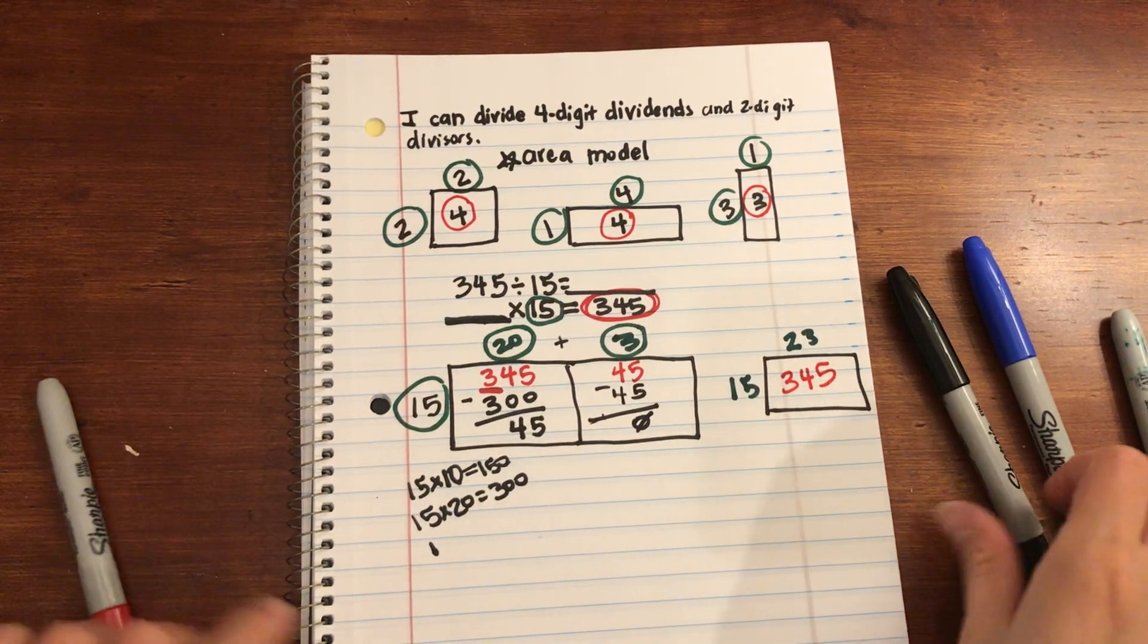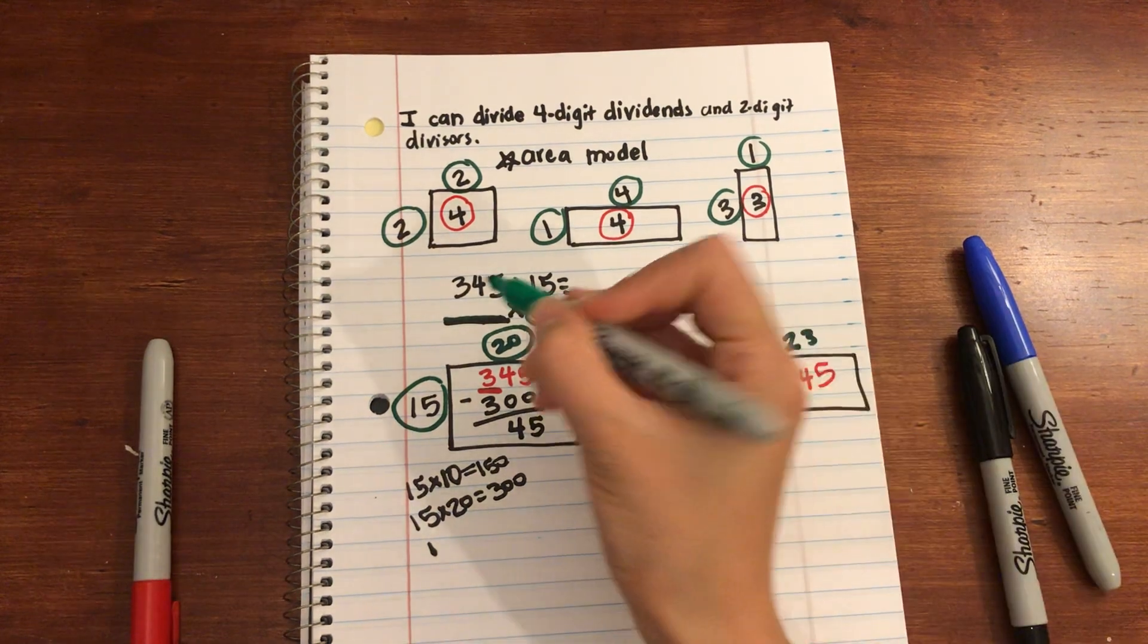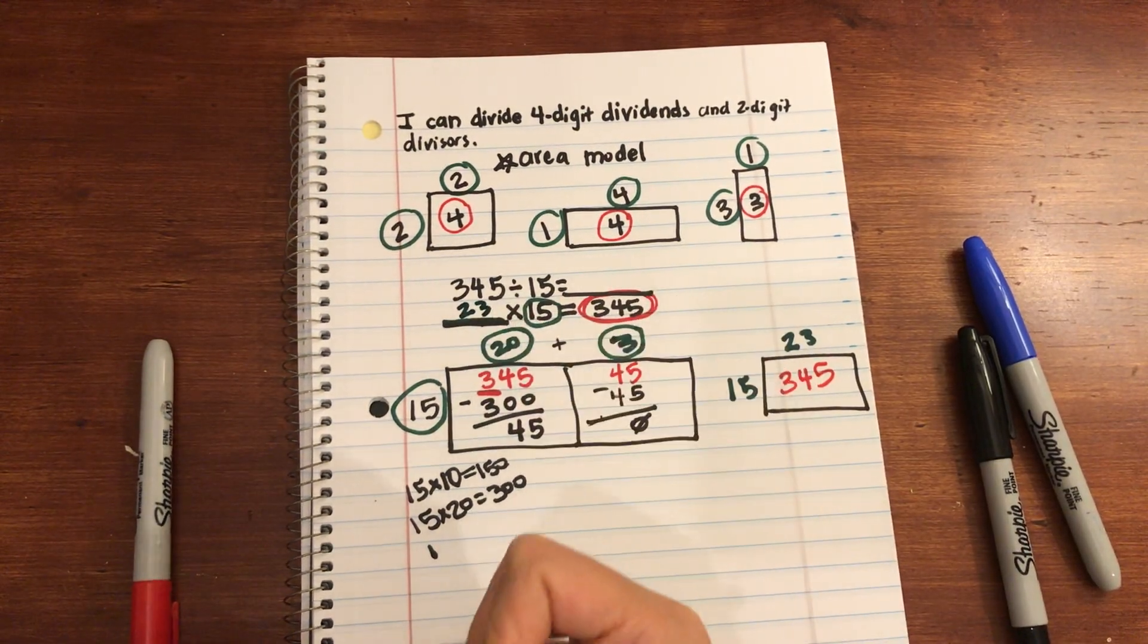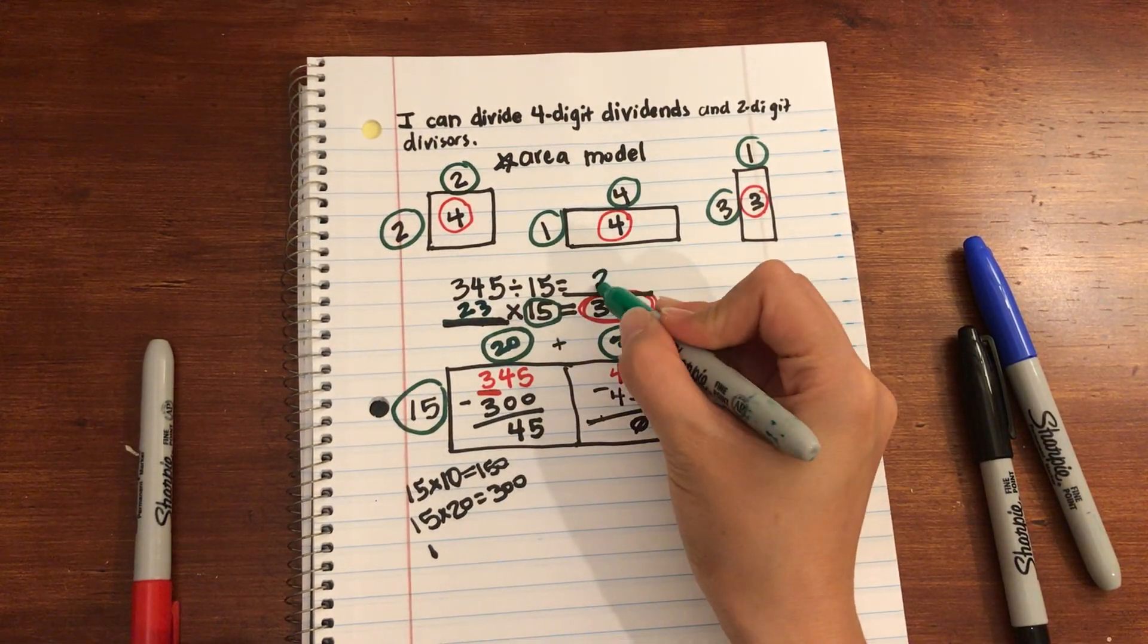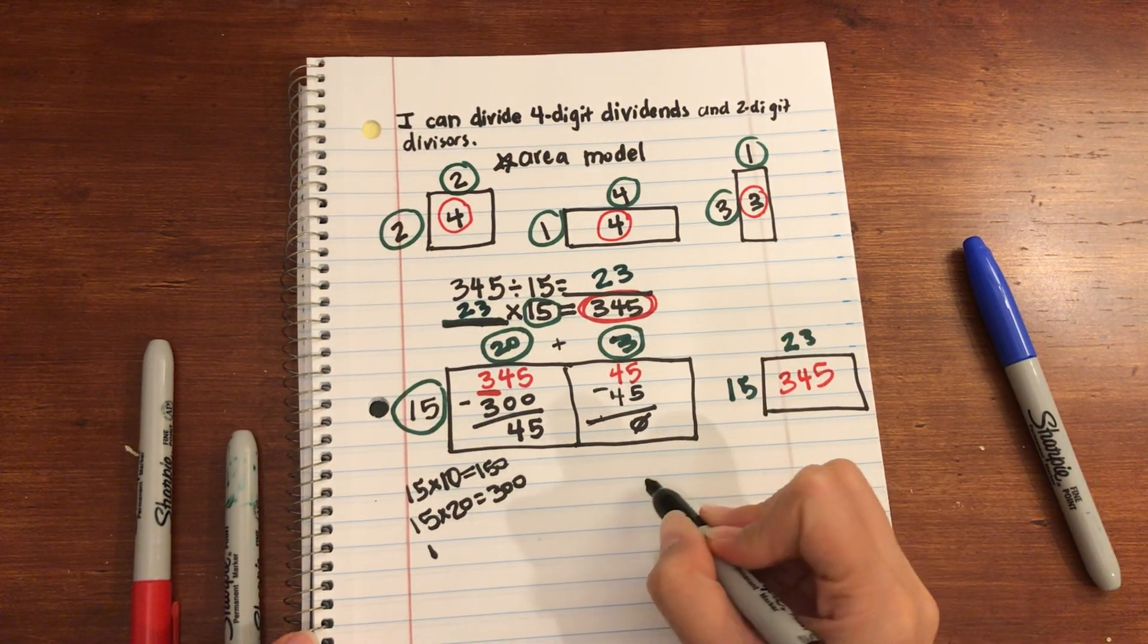And I'm going to check my answer, because I found my missing factor. I found the 23. And this is actually also going to be my quotient 23. That's what I was looking for originally. And I can always double check my work with division with its inverse.